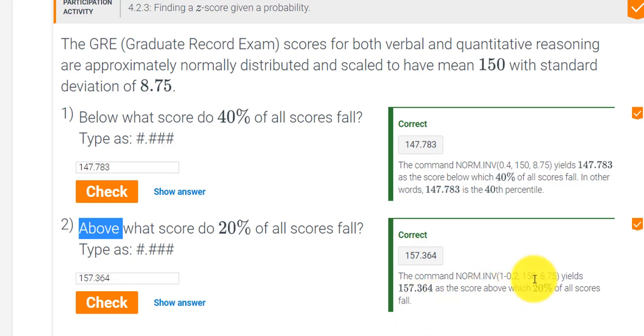And then the mean was still 150, and the standard deviation was still 8.75. So a score of 157, 20% of all scores will fall in that area.